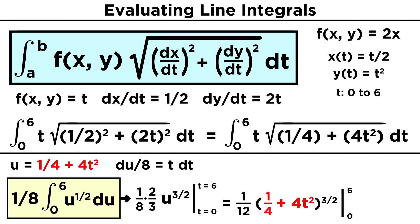Simplifying and plugging our original expression back in, we have one twelfth times one fourth plus four t squared to the three halves, from zero to six. Plugging in t equals six, and subtracting from that the expression at t equals zero, we get one twelfth times one fourth plus four times thirty-six to the three halves, minus one twelfth times one fourth to the three halves. Plugging this into a calculator gives us approximately one hundred forty-four point three six. This is the area under the surface, f of xy equals two x, along our curve c.